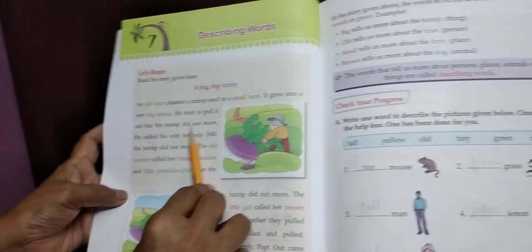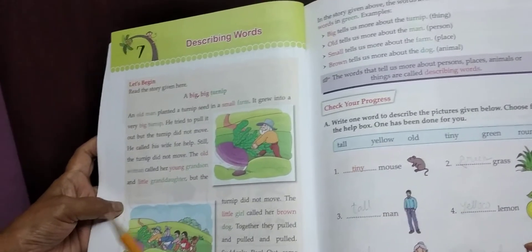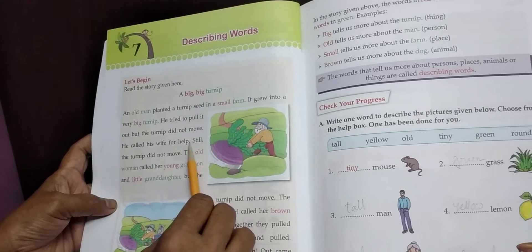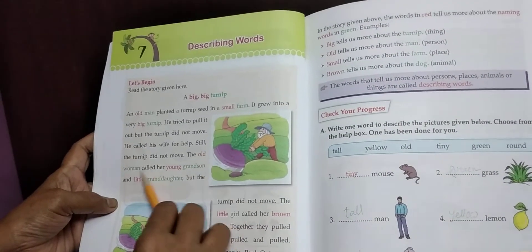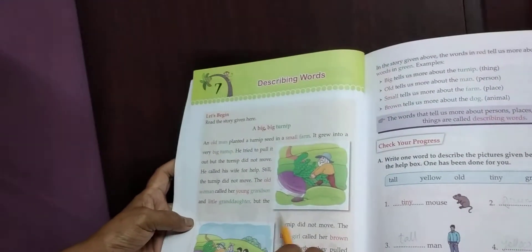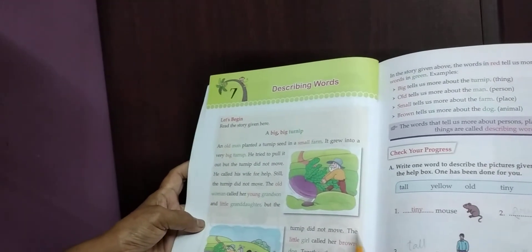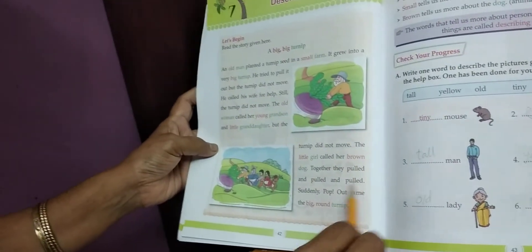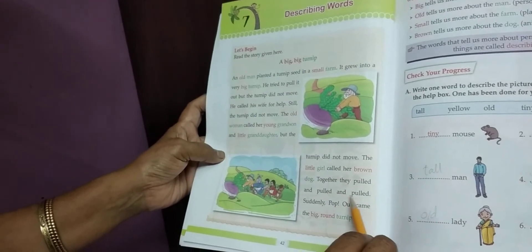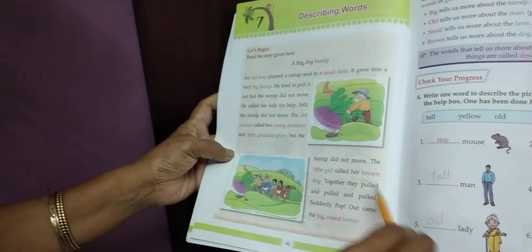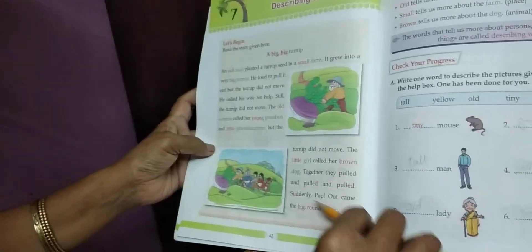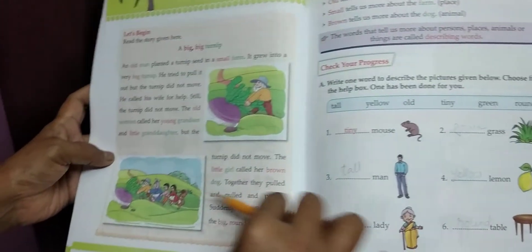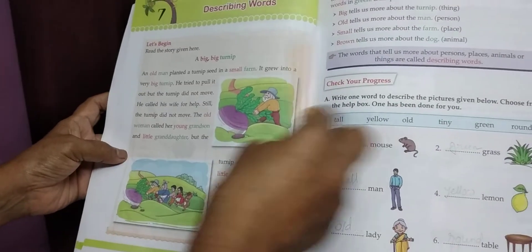An old man planted a turnip seed in a small farm. It grew into a very big turnip. He tried to pull it out but the turnip did not move. He called his wife for help. Still the turnip did not move. The old woman called her young grandson and little granddaughter. But the turnip did not move. The little girl called her brown dog. Together they pulled and pulled and pulled. Suddenly pop out came the big round turnip.